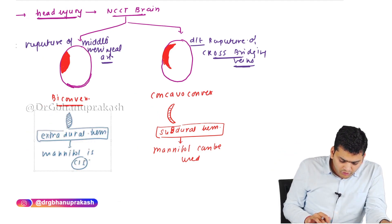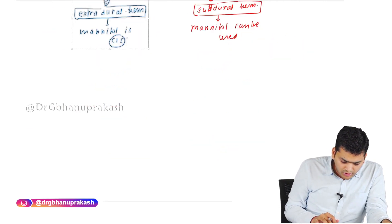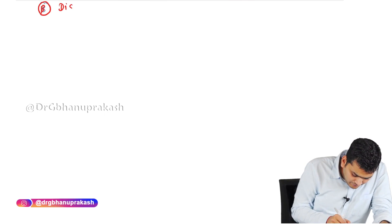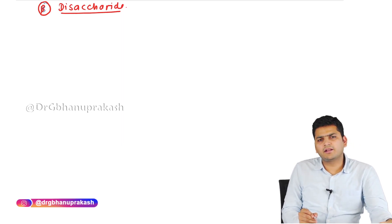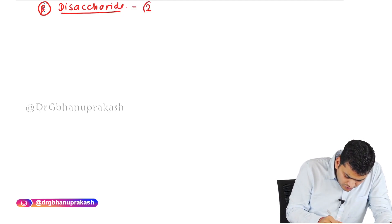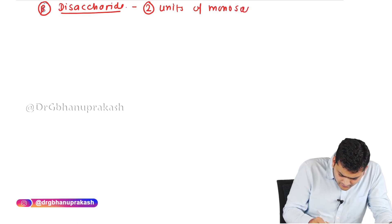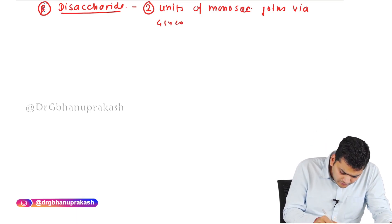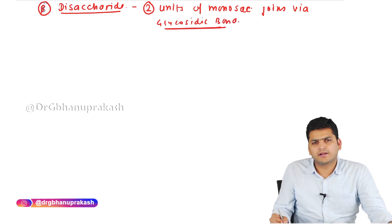This completes the monosaccharide part. Now coming to the disaccharide — the second category of carbohydrate. A disaccharide is formed when two units of monosaccharide join via a glycosidic bond.